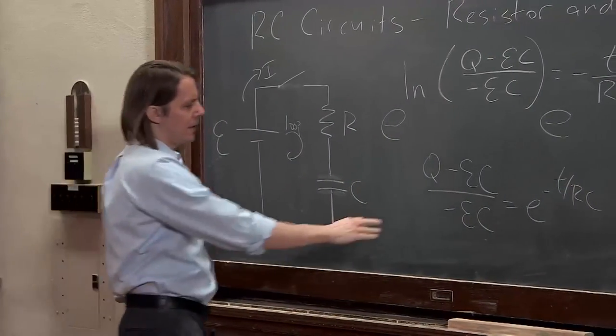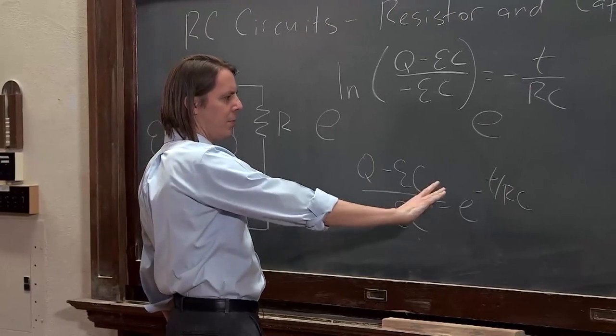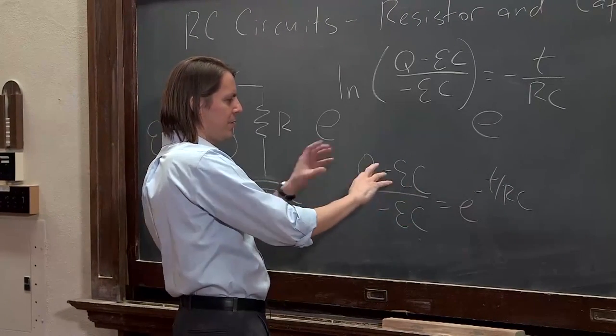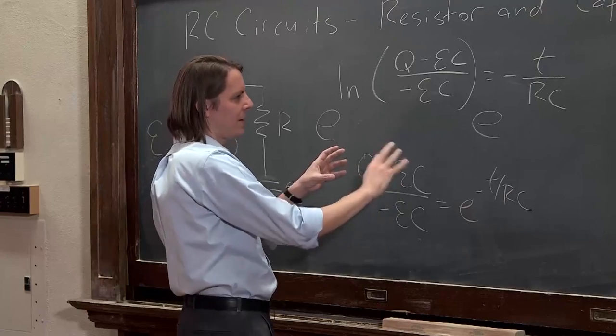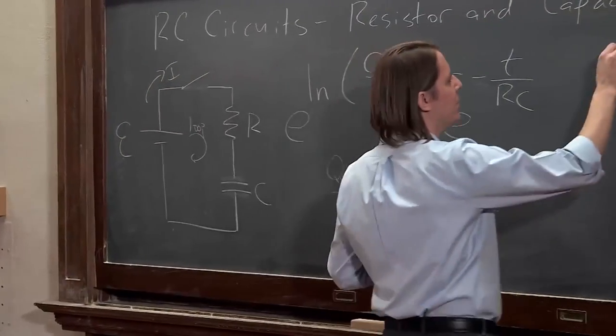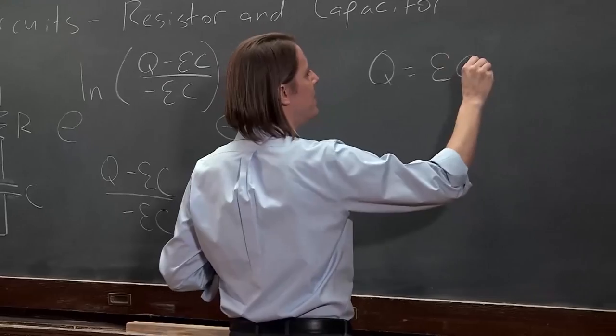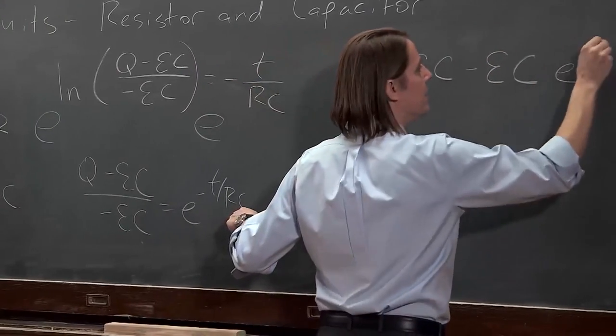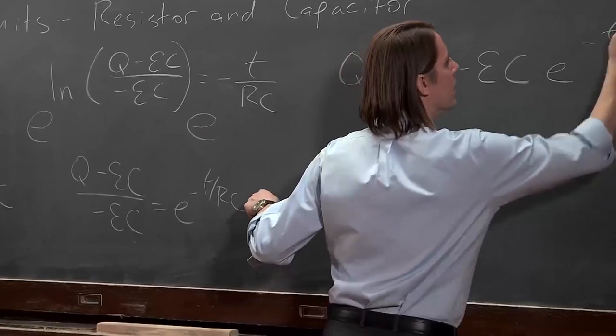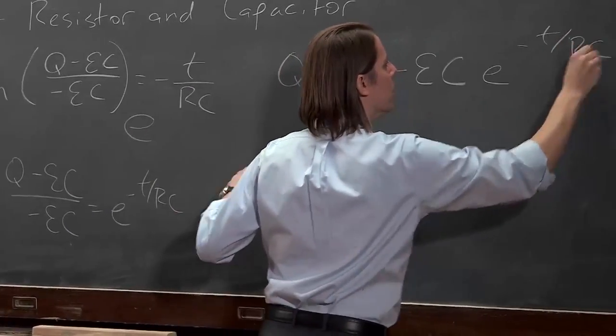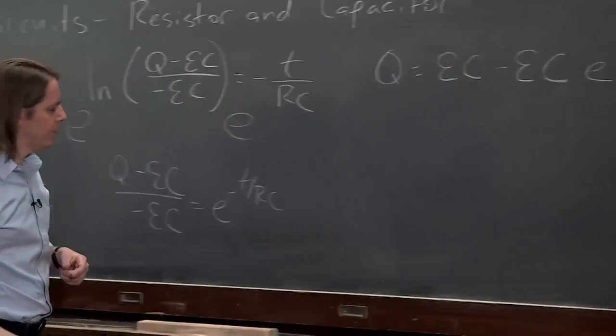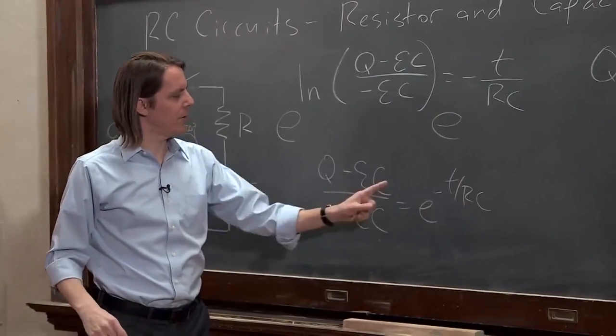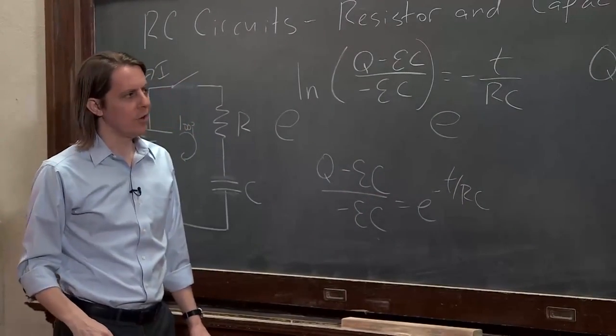OK, and then we can bring this up here. And then you'll have Q minus the EMF over C and bring that to the other side. And then you'll end up with Q equals the EMF times C minus the EMF times C times E to the minus T over RC. So I just brought that over there and then brought that over there to get Q by itself.